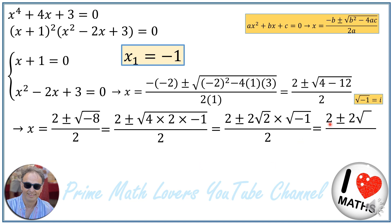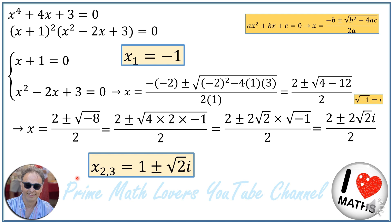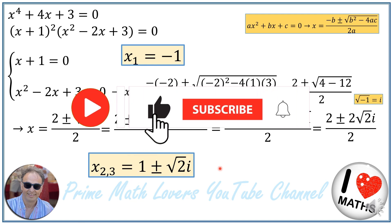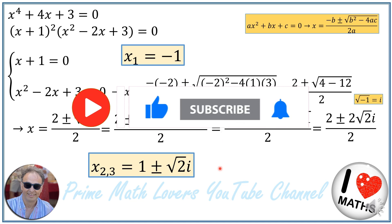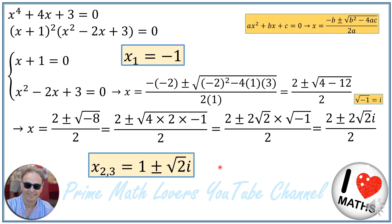And I will have 2 plus or minus 2 times square root of 2 times i, over 2. Dividing by 2, the other two roots of the equation are equal to 1 plus or minus square root of 2 times i. As simple as that! I hope you enjoyed the video. Your support would be greatly appreciated if you could give it a thumbs up, subscribe to our channel, and share it with your friends. Thank you so much, wishing you a fantastic time wherever you are on this planet.